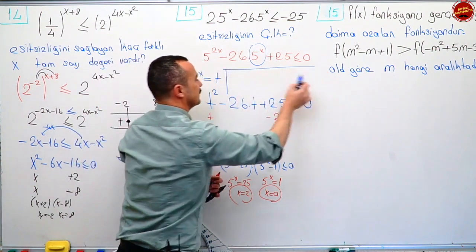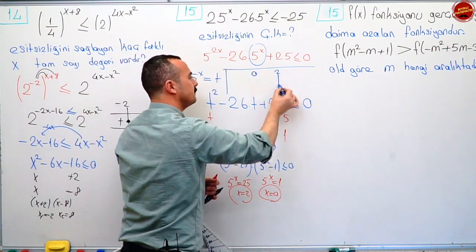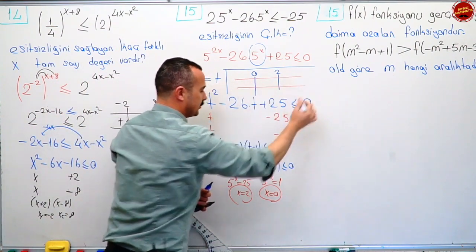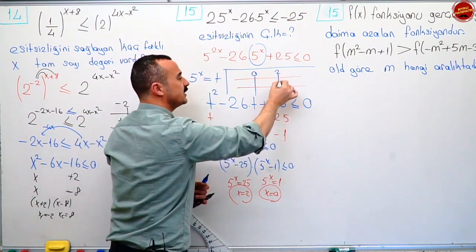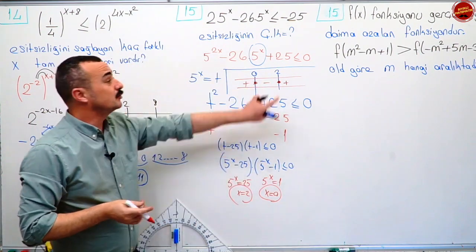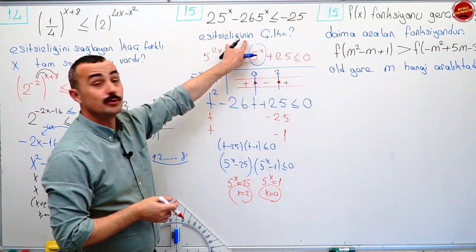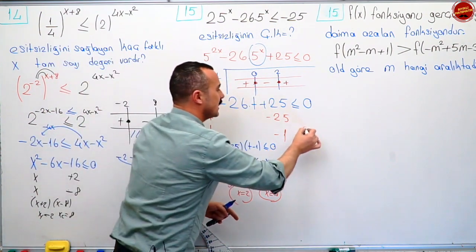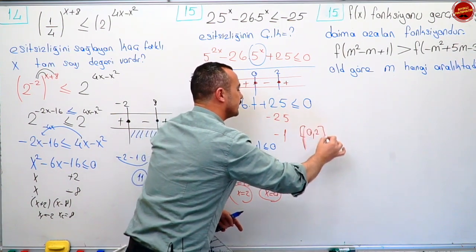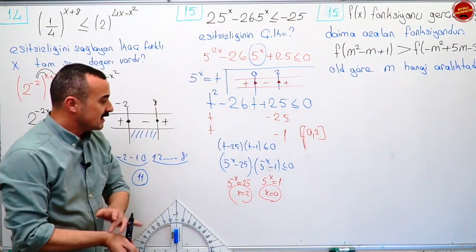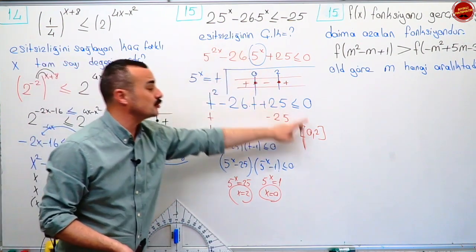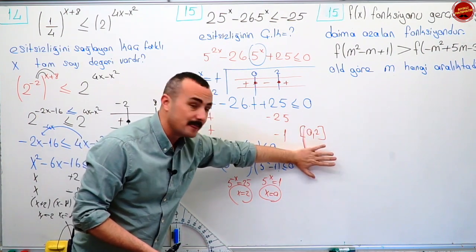Köklerimden biri sıfır, biri iki. Tablomu yapayım. En büyük dereceli terimin içi artı. Eşitlik var mı diye bakıyorum — eşitlik de var. İçlerini dolu yapıyorum. O zaman artı, eksi, artı. Sıfırdan küçük eşit olduğu yeri soruyor. Çözüm kümesi nedir? x'lerim eşitlik olduğu için köşeli parantez, sıfırla iki aralığında. Sakın gidip t'lerin çözümünü x'lerin çözümü yapma. Bize x'lerin çözüm kümesini istiyor. Cevap: [0, 2].